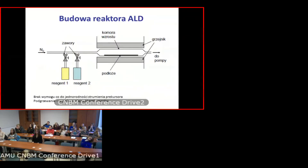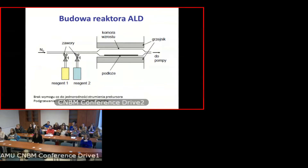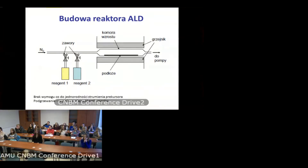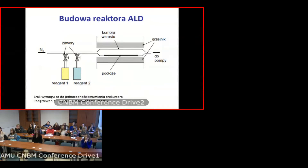Jak jest zbudowany taki reaktor ALD? Mamy tutaj dwa reagenty chemiczne — reagent pierwszego i drugiego typu. Posiadają na górze zawory manualne, które otwieramy przed procesem osadzania. Dalej mamy komorę wzrostu, która jest podgrzewana — to jest perforowana rurka dookoła komory wytwarzająca odpowiednią temperaturę. Jest wyjście z komory procesowej do pompy, która odpompowuje zbędne poprocesowe reagenty, które nie przereagowały z substratem.